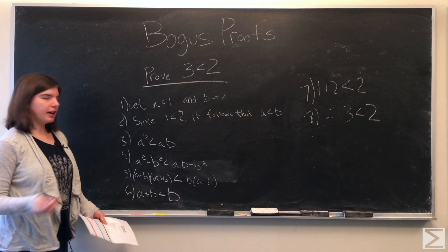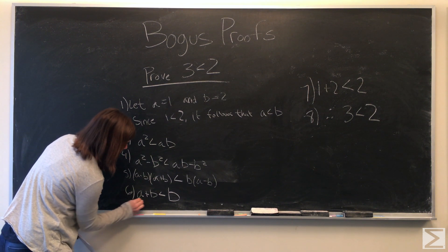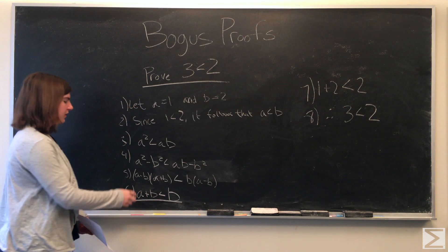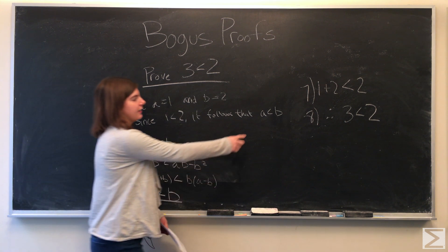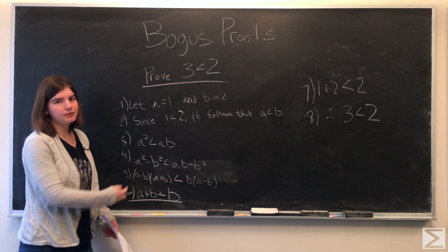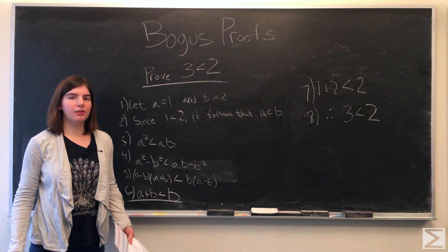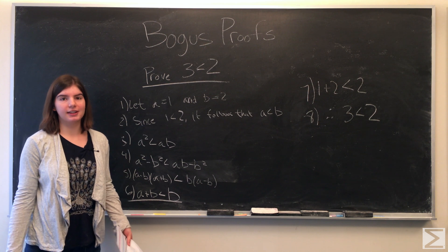Alright, our error is in line 6. When we divide both sides by A minus B, we have to remember that we said that A is less than B. So A minus B is actually a negative number, and when you divide both sides of an inequality by a negative number, you have to switch the signs.